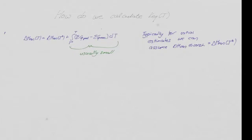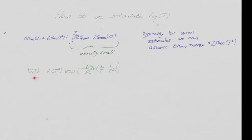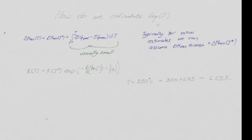If that's the case, going back to your thermodynamics, there's a relationship between the equilibrium constant at some temperature T and the equilibrium constant at T₀ — standard conditions, 25°C. They are related by multiplying the equilibrium constant at 25°C by the exponent of minus ΔH of reaction over R, times (1/T minus 1/T₀). In our case, let's say we want to work out the equilibrium constant at 350°C, and remember we always have to go to Kelvin — so that's equivalent to 623 K.